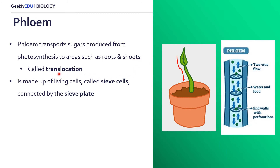This process of sugars being transported in phloem is called translocation. And unlike xylem, which is made of dead cells, phloem is made of living cells. Also unlike xylem, which has one-directional flow, phloem has two-directional flow.